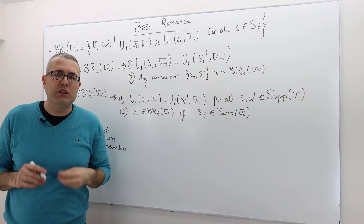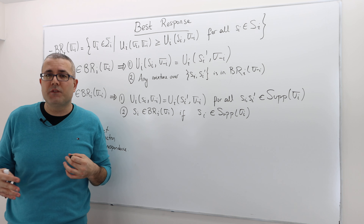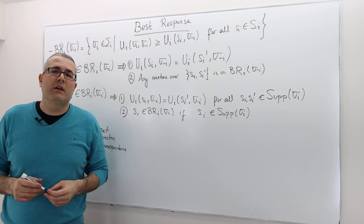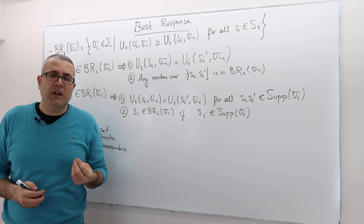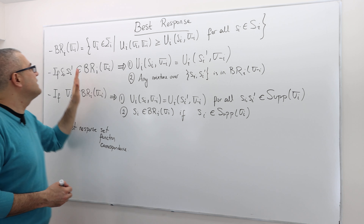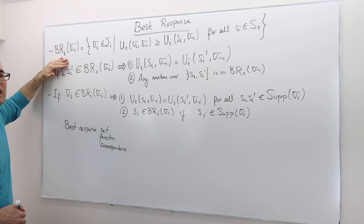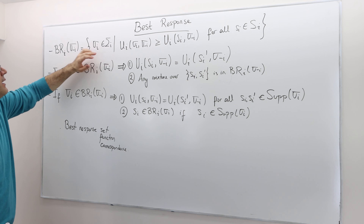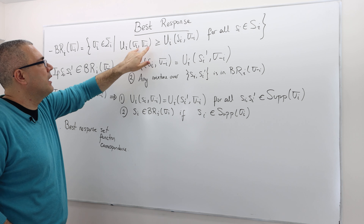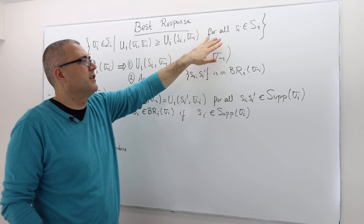The best response correspondence is the set of strategies that are best responses to the opponent's strategy sigma_{-i}. When we define dominance and strict dominance, we never talk about the opponent's strategy, because the dominant strategy is universally better. However, when we talk about best response, it is a conditional concept that depends on the other player's strategy. Fixing sigma_{-i}, the best response set is the set of mixed strategies sigma_i such that u_i(sigma_i, sigma_{-i}) ≥ u_i(s_i, sigma_{-i}) for every s_i.